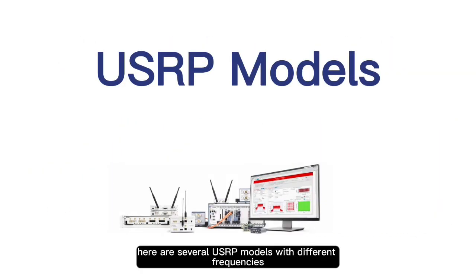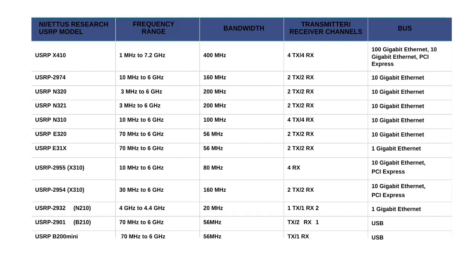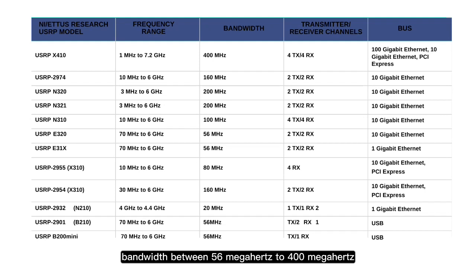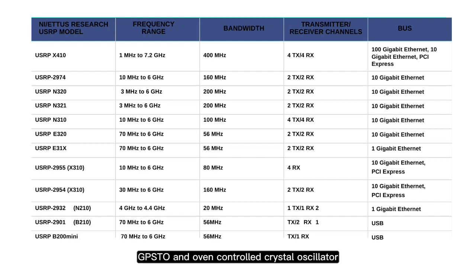Here are several USRP models with different frequencies varying between 1 MHz to 7.2 GHz, bandwidth between 56 MHz to 400 MHz, and configurations including SISO, SEMO, MISO, MIMO, GPSDO and oven-controlled crystal oscillator.